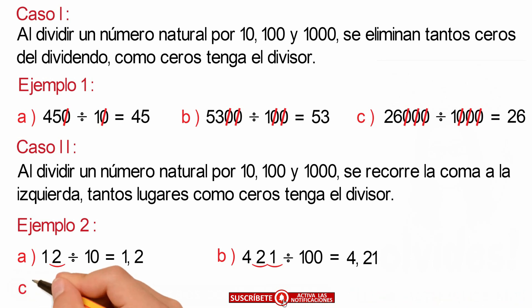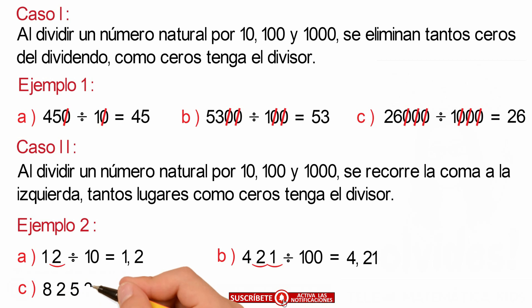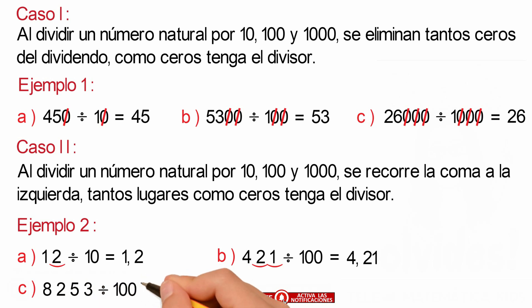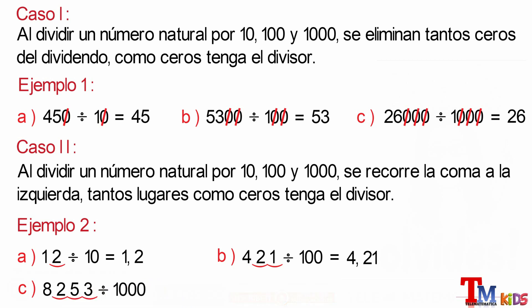Literal C: 8,253 dividido para 1,000. De forma similar, como no existen ceros a la derecha del dividendo que podamos simplificar, corremos la coma tres lugares a su izquierda y nos quedaría como resultado 8,253.